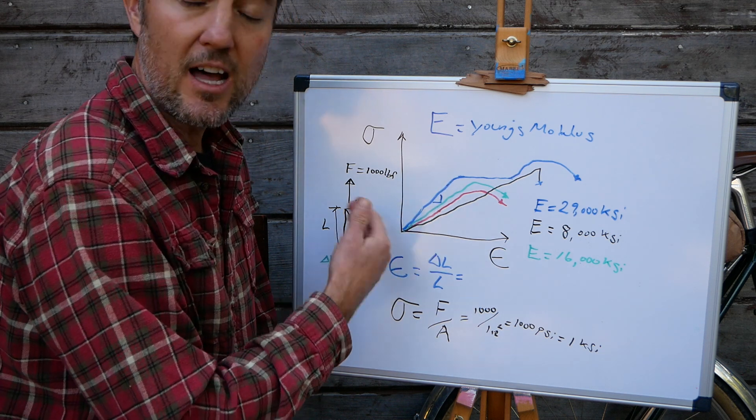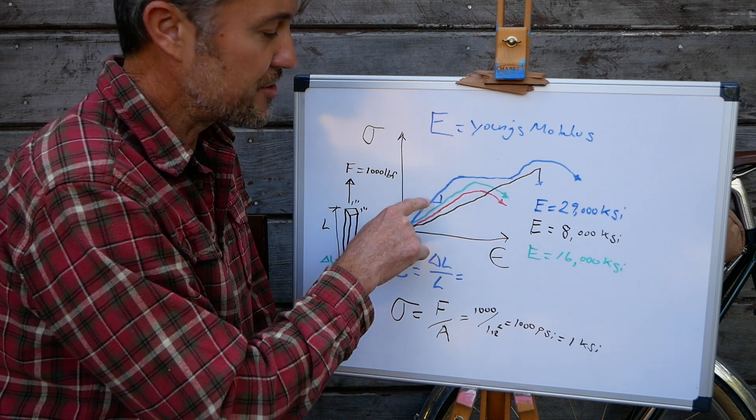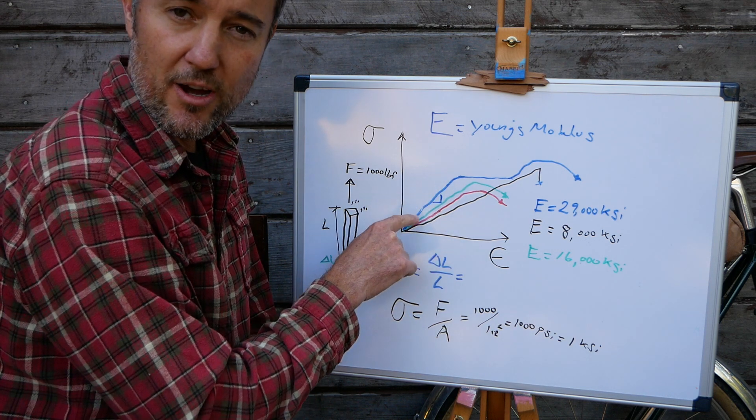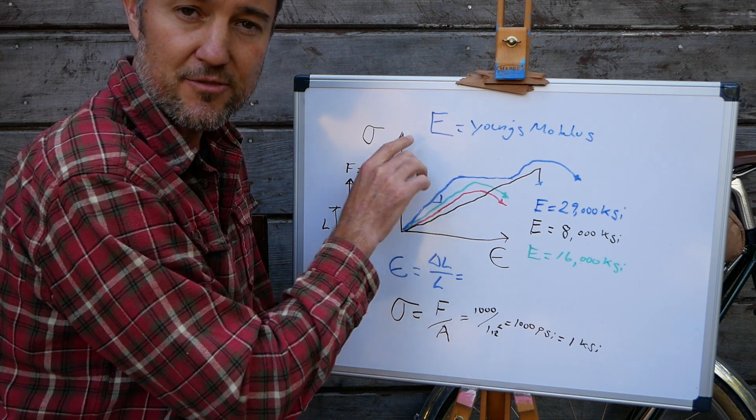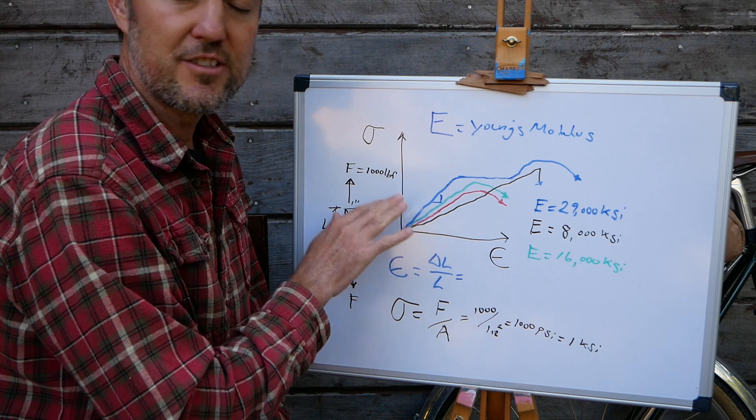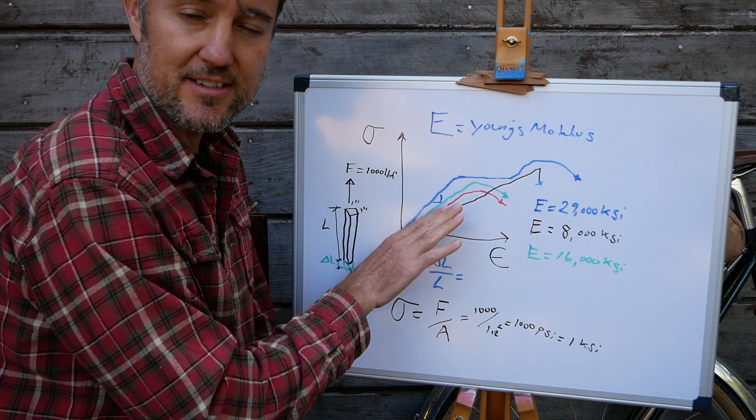The slope of the line, which is the rise divided by the run, is what is known as Young's modulus. So it's very simply just the slope of the line when it is in a linear elastic state.